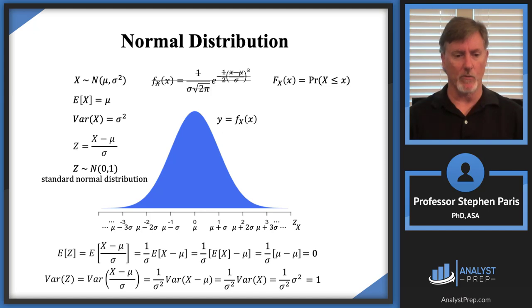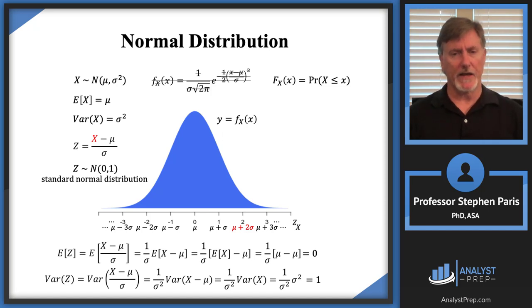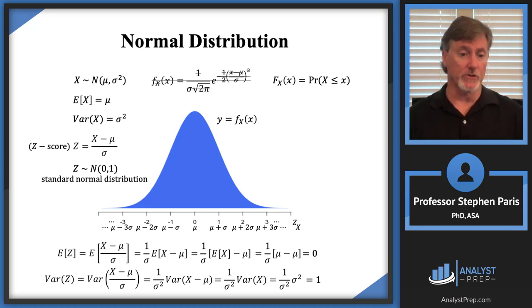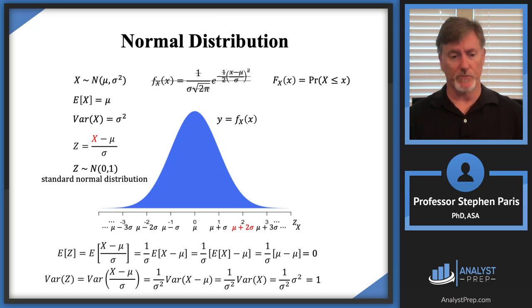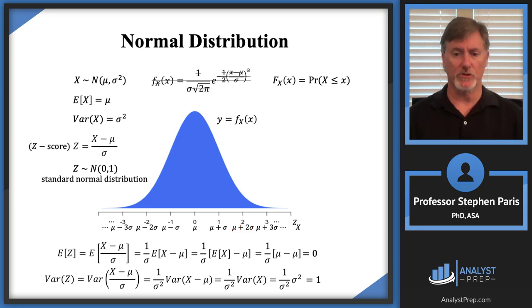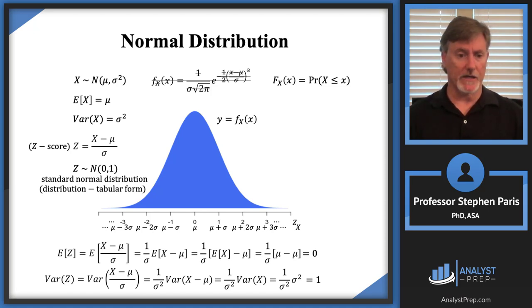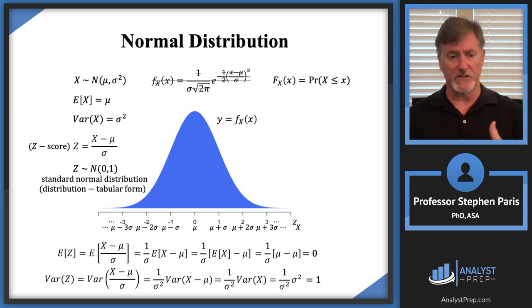For example, if we look at an X value of μ + 2σ, that value is two standard deviations to the right of the mean, corresponding to a z-score of 2. So μ + 2σ as the X value gives us a z-value of 2 through the transformation. These values are sometimes referred to as z-scores.